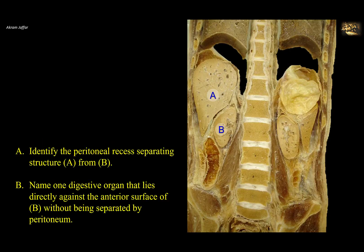Identify the peritoneal recess separating between A and B, and then name one digestive organ that lies directly against the anterior surface of B without being separated from it by peritoneum.